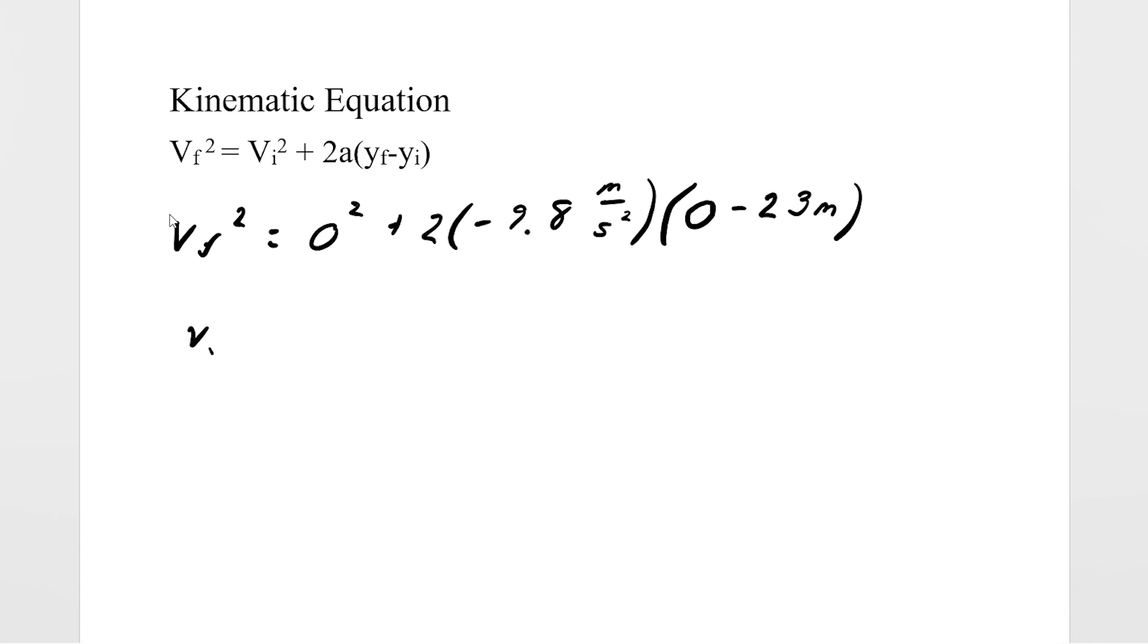From here we can simplify, so this is going to be negative 19.6 meters per second squared times negative 23 meters. When we simplify this further, then we're going to see that we get 450.8 meters squared over second squared.